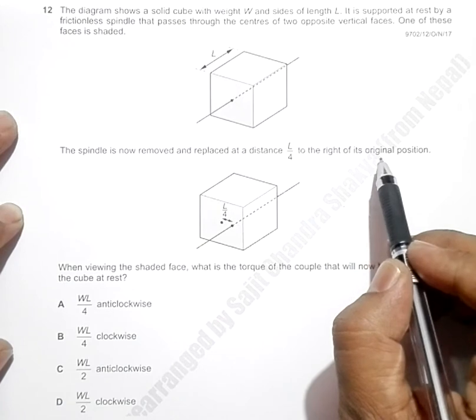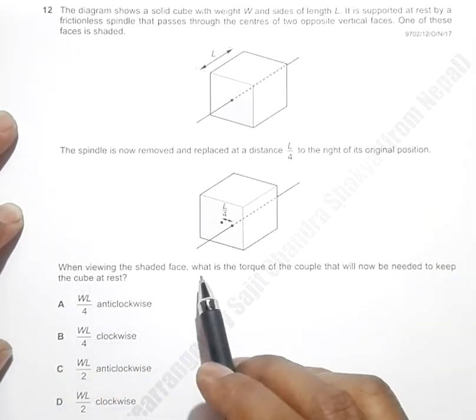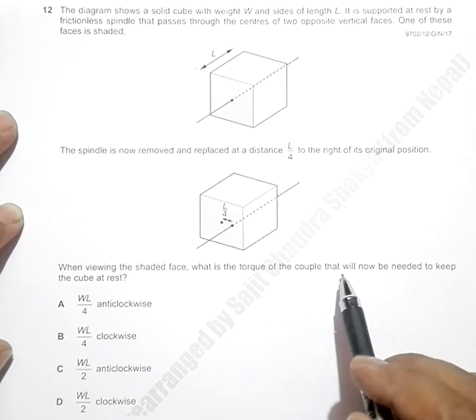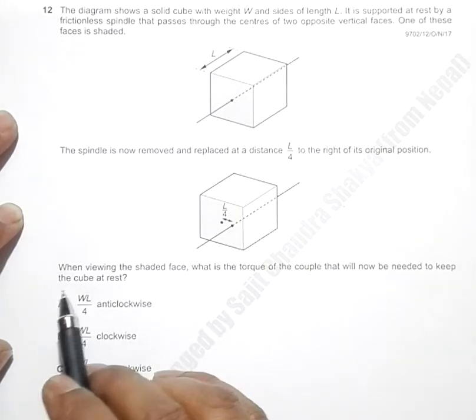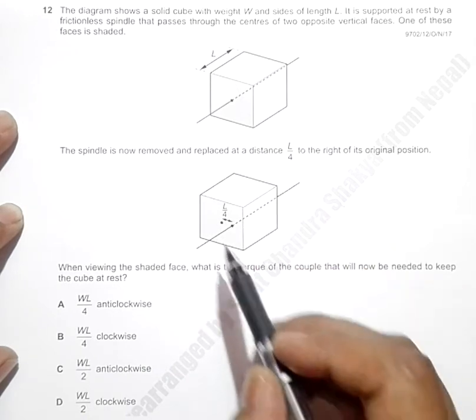When viewing the shaded face, what is the torque of the couple that will now be needed to keep the cube at rest? Once we fix the spindle here,